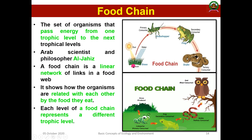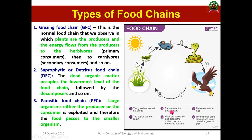Another food chain example: grass → caterpillar (primary consumer) → frog (secondary consumer) → snake (tertiary consumer) → owl (top consumer). The owl is the top consumer, and the snake acts as food for the owl. When you relate organisms in a linear network from one system to another, that is known as a food chain.